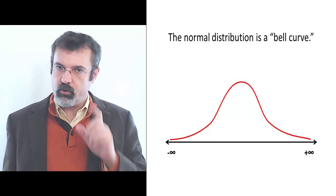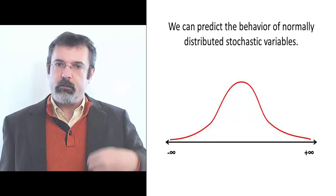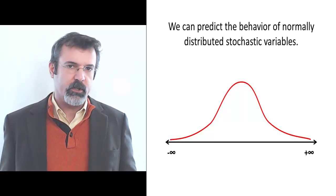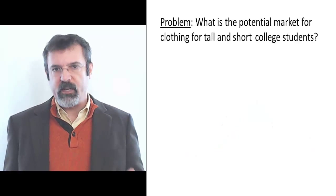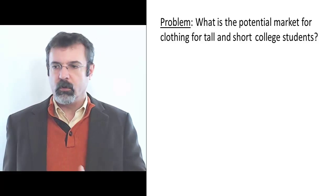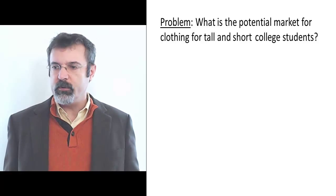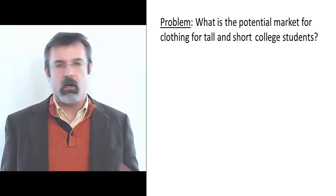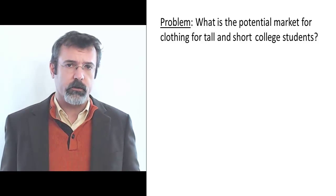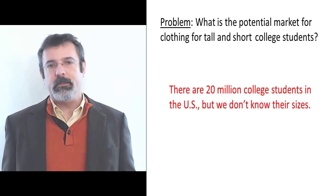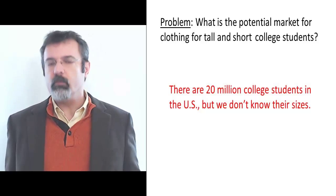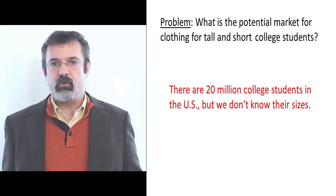By understanding the normal distribution, we can predict the behavior of stochastic variables that are normally distributed. For example, suppose we want to determine the potential market for a line of clothing that caters to college students who are particularly tall or particularly short. We know that there are 20 million college students in the United States, but what we don't know is what heights these students are.